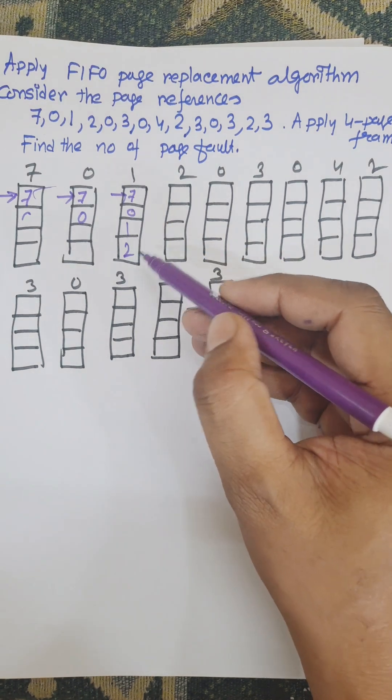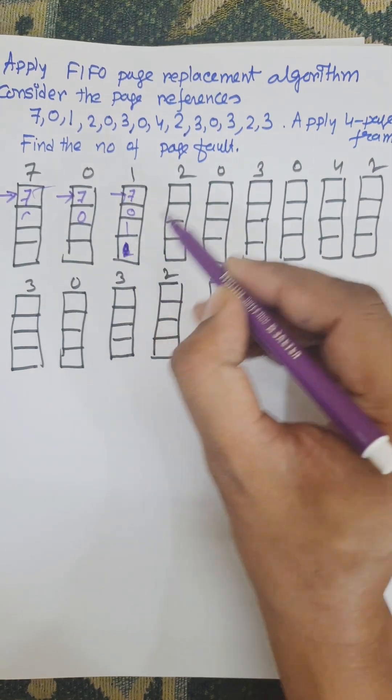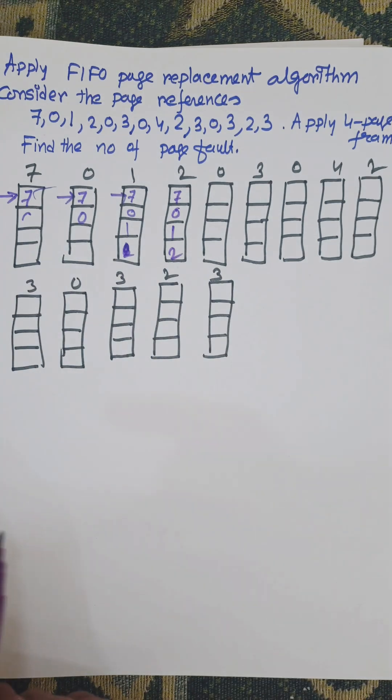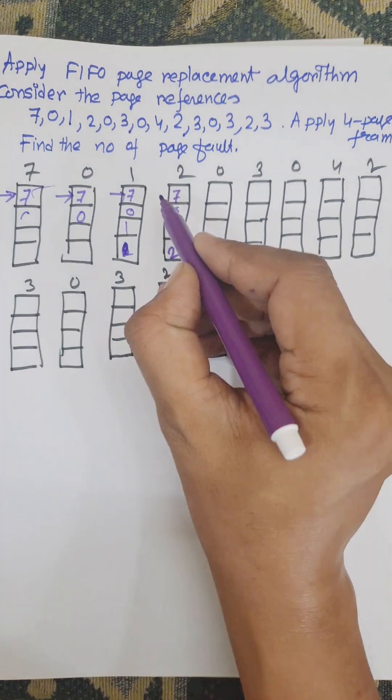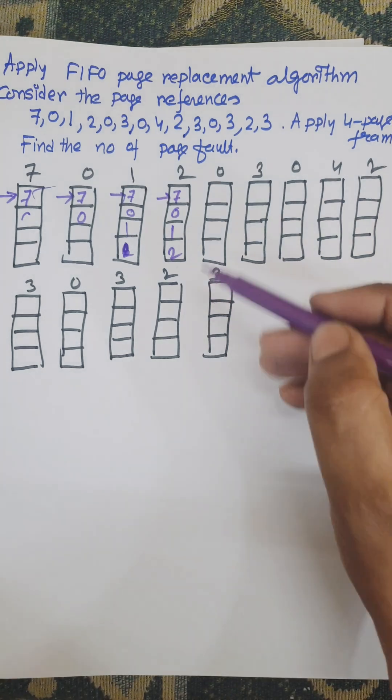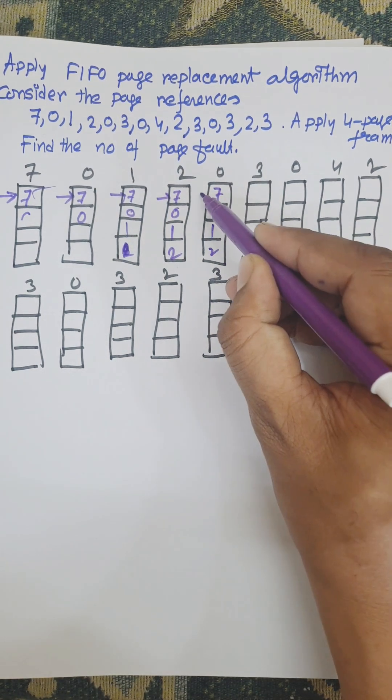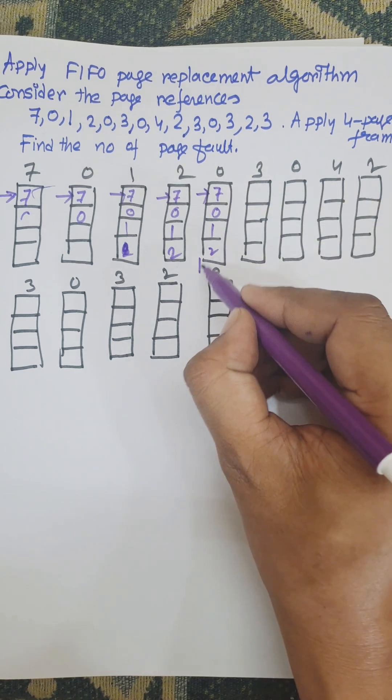Here 7, 0, 1, then 7, 0, 1, 2. These are page faults because we need to bring the page from the secondary memory to main memory. Now 2 is available here, so this is hit. Write down hit here.